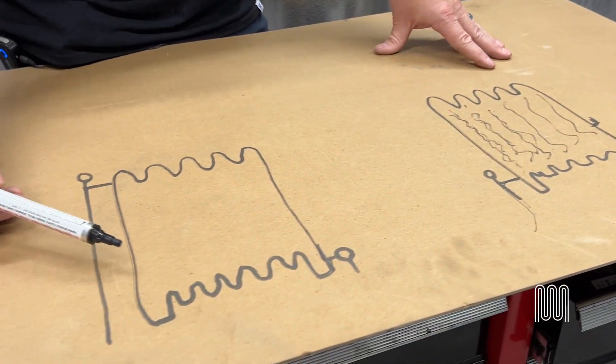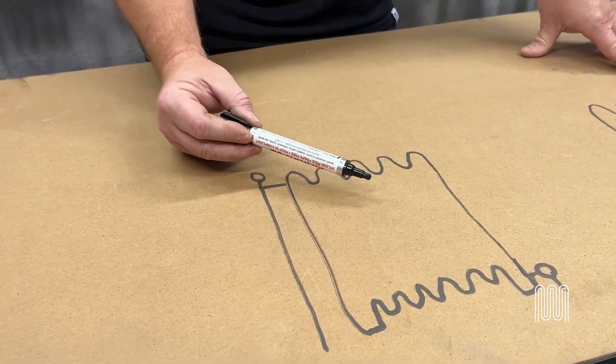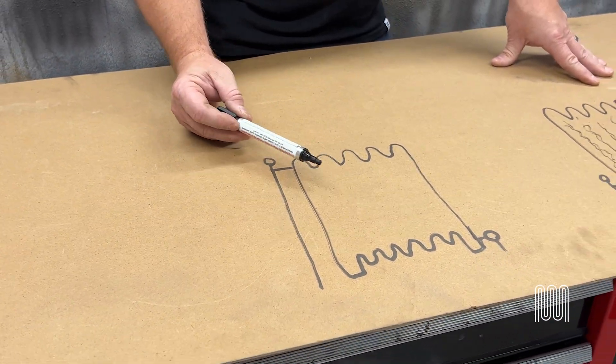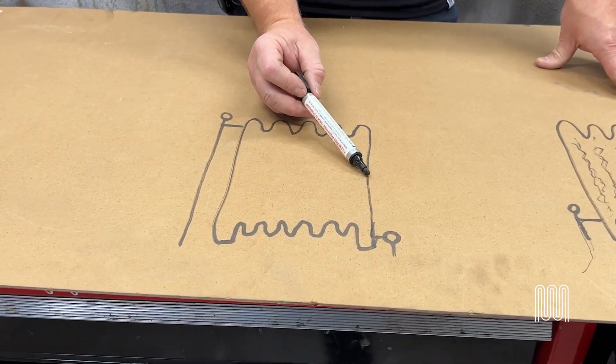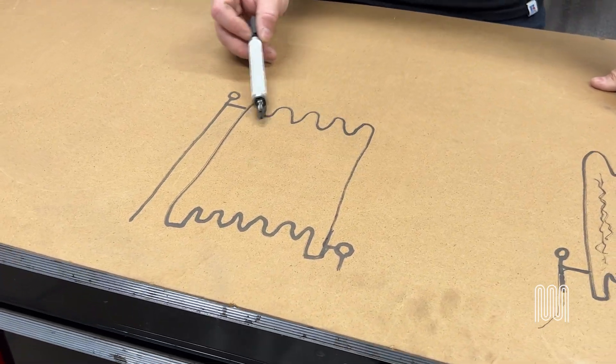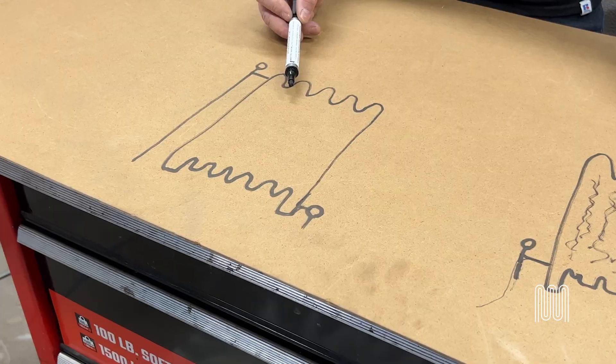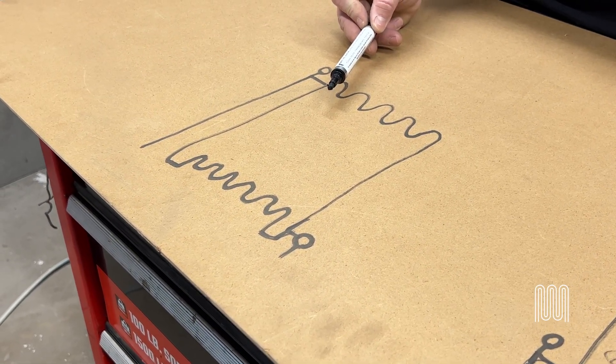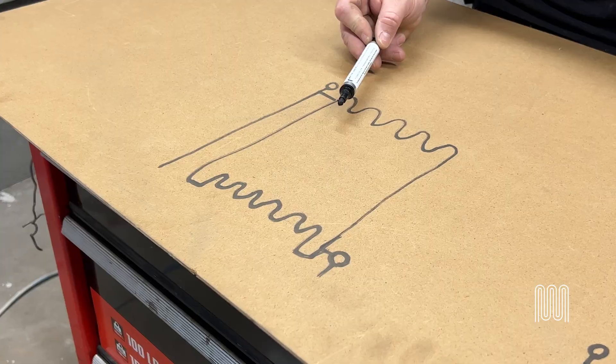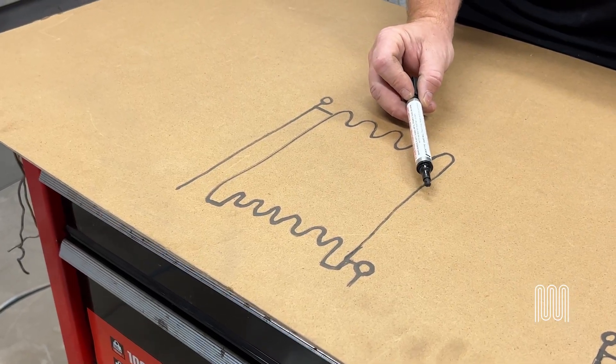When we move over to the two pipe system, functionally it can be the same radiator. The only difference is now we have a second tapping for steam trap and we no longer have an air vent. When you see an air vent on a two pipe steam radiator, that is generally a band-aid. There is a bigger problem in the system and somebody was able to rectify that by just putting a vent on.